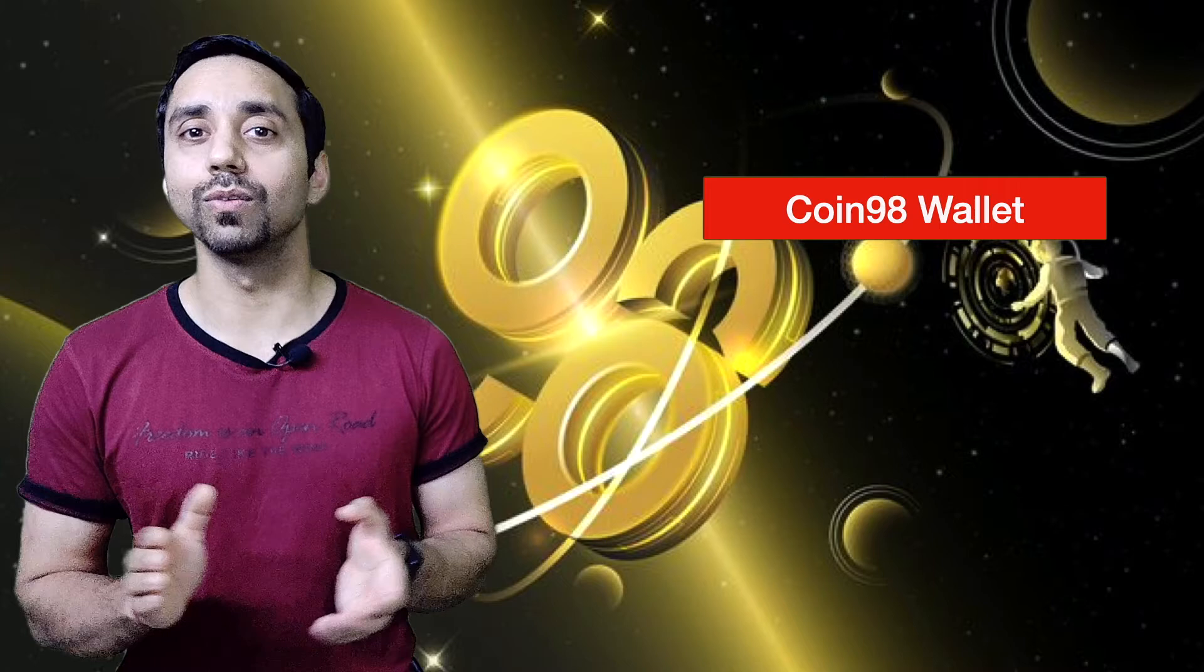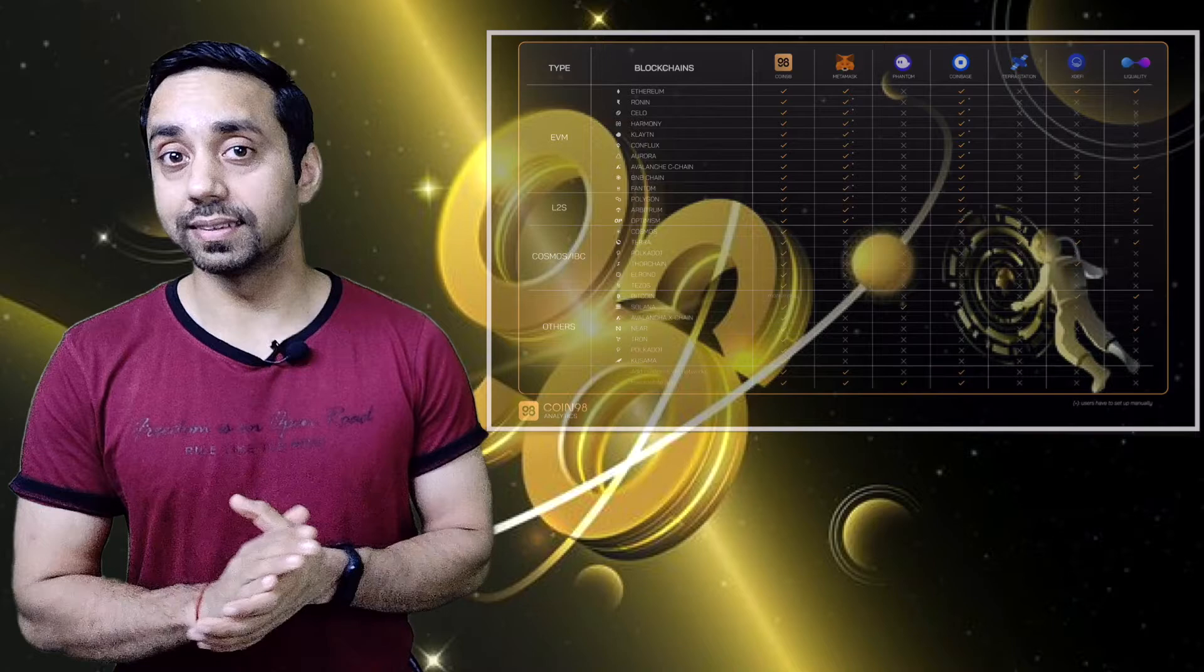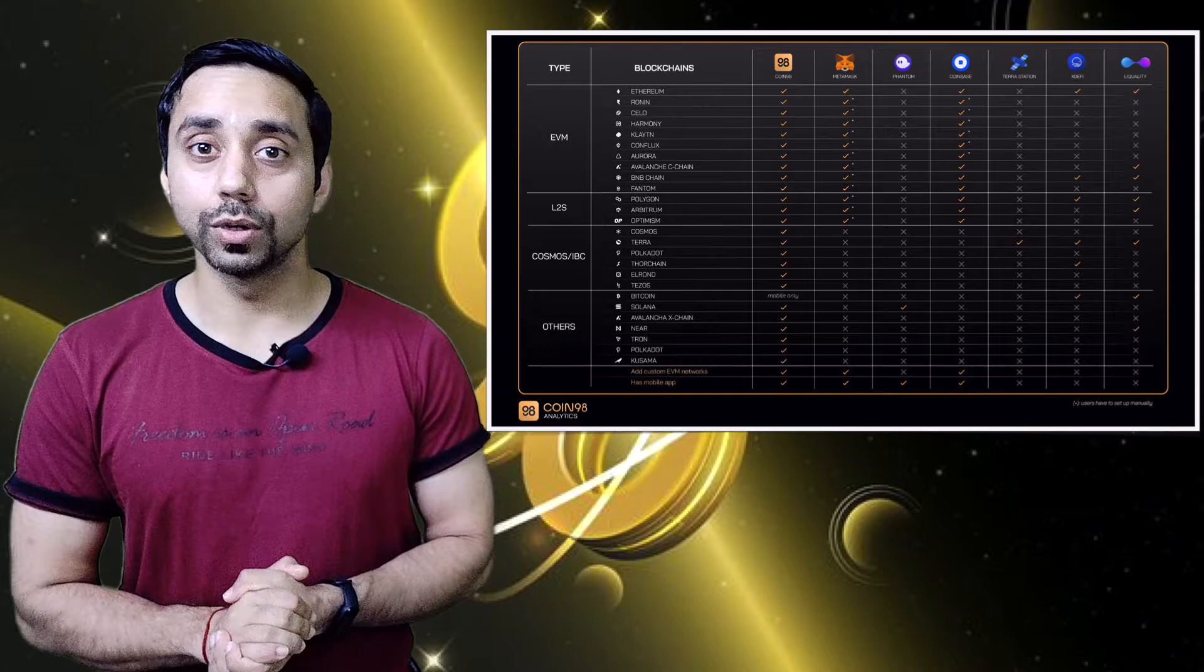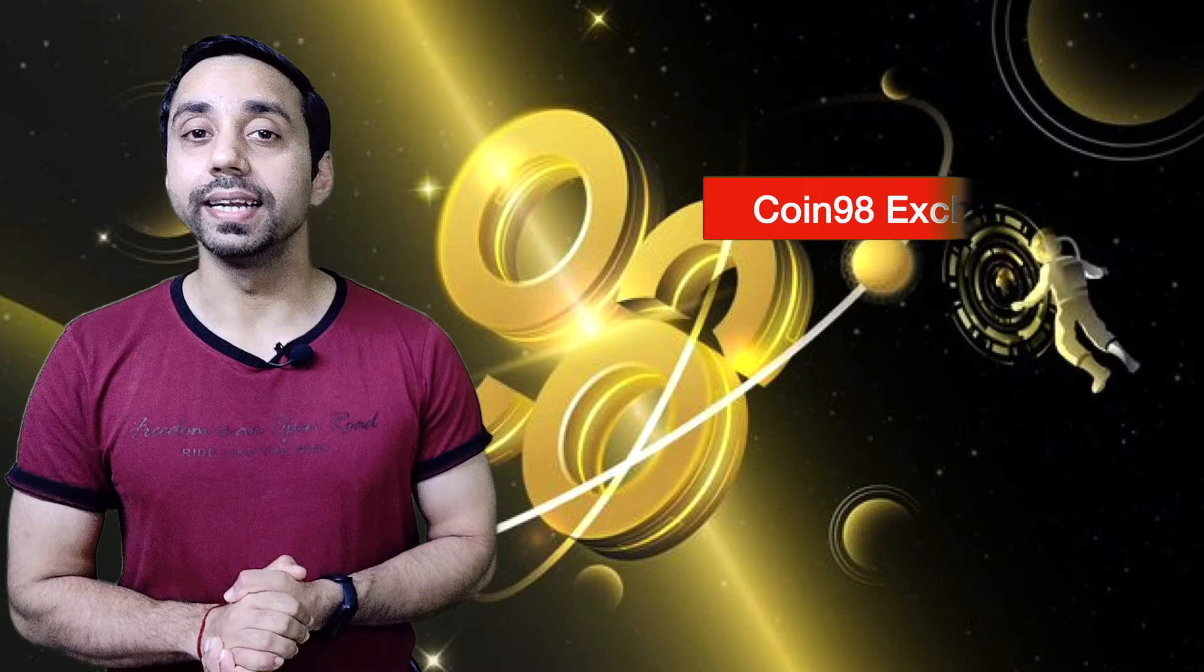With its own wallet, it has a list of products that support its ecosystem. Now to start with the number one product is its Coin98 wallet. Coin98 wallet is the in-app wallet built by Coin98 team. It has the power to store any type of tokens on this platform. There are already 20 plus blockchains that have been supported by this wallet. You can store ERC20 tokens, BEP20 tokens and SPL tokens.